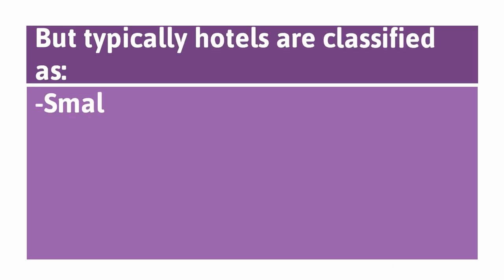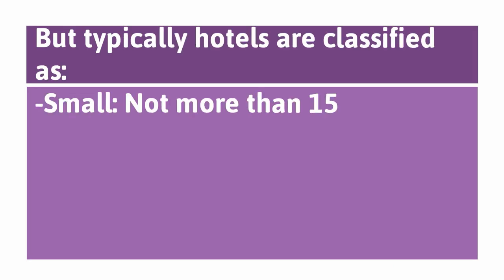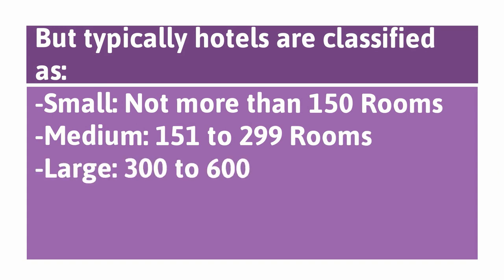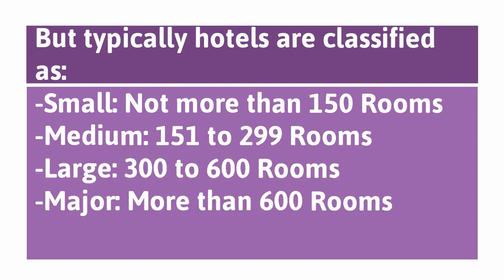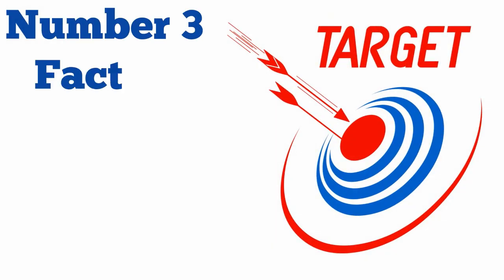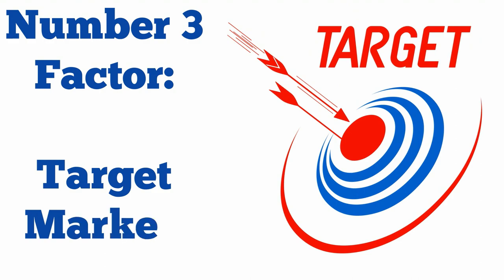But typically, hotels are classified as: Small — not more than 150 rooms; Medium — 151 to 299 rooms; Large — 300 to 600 rooms; Major — more than 600 rooms.